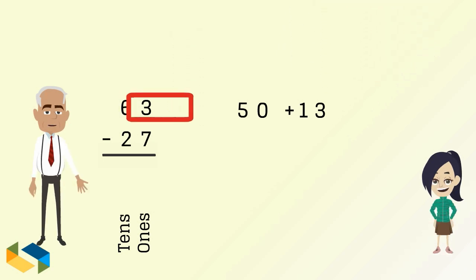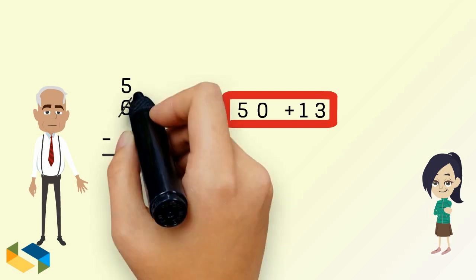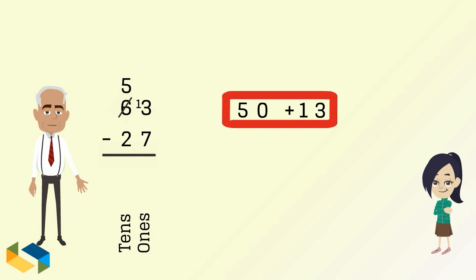The way we write this down in our problem is we cancel the 6 and replace it with a 5, denoting the tens place to be 50. Then we write a 1 against the 3, meaning it is now 13, which as you can see, is bigger than 7.